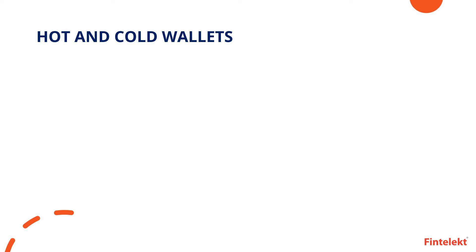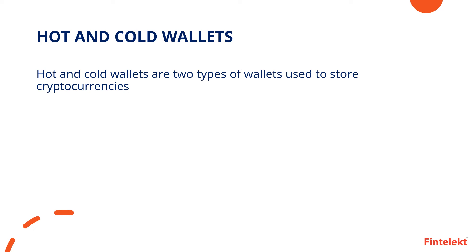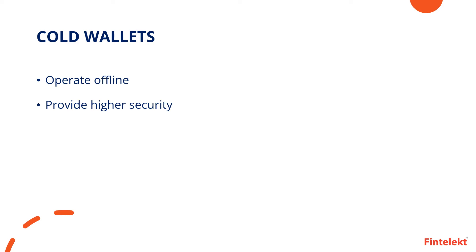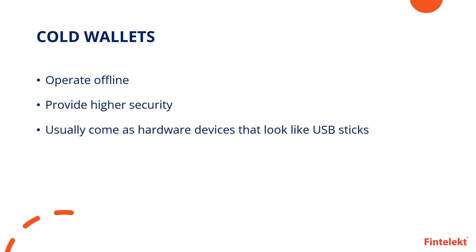Hot and cold wallets are two types of wallets used to store cryptocurrencies. Hot wallets are connected to the internet, allowing quick access to funds and transactions. They are convenient and fast, but connectivity to the internet makes these wallets more prone to security risks. Cold wallets operate offline and provide higher security. These wallets usually come as hardware devices that look like USB sticks. These wallets are less convenient and more expensive.